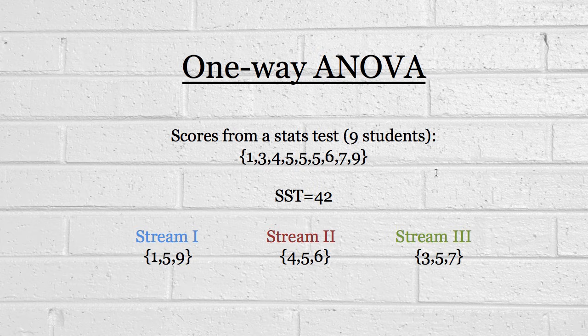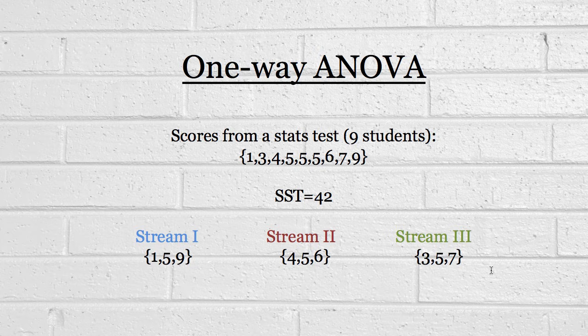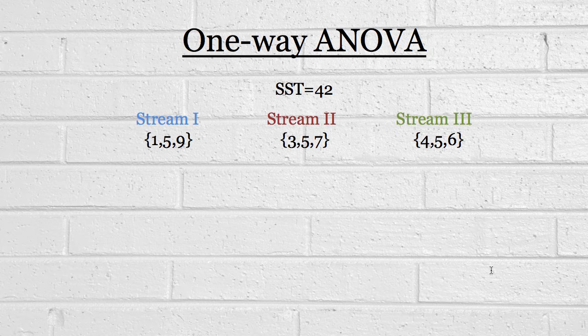Now, let's presume that there were three different streams or classes. You can see that in one stream, we had the person that scored one, the person that scored five, and someone that scored nine in that stream. Stream two, we had a four, five, six. And stream three was three, five, seven. Now, the question is, and this is what one-way ANOVA asks, is there a difference between the streams? Can we say that stream one did better or worse than stream two or stream three?